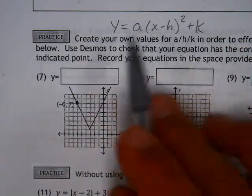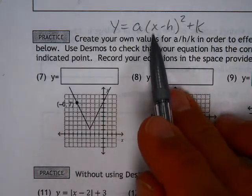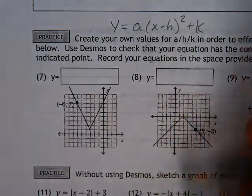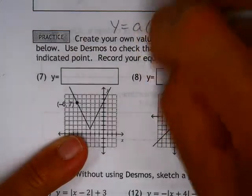As we get to know this equation here, y equals a times the quantity x minus h squared plus k. Oops, what I meant to say was, I'm just keeping this.